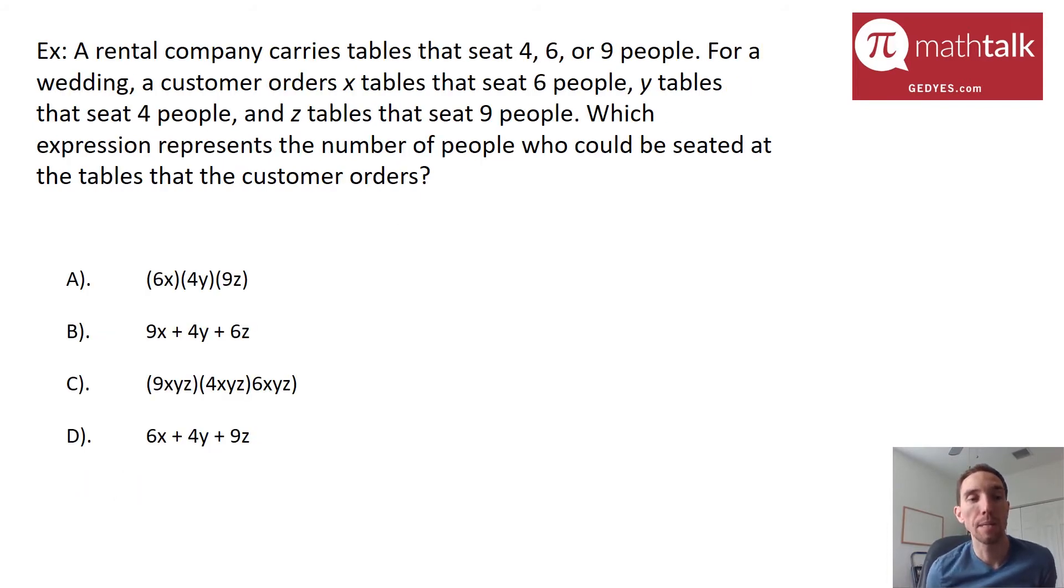A rental company carries tables that seat four, six, or nine people. For a wedding, a customer orders X tables that seat six people, Y tables that seat four people, and Z tables that seat nine people. Which expression represents the number of people who can be seated at the tables that the customer orders?